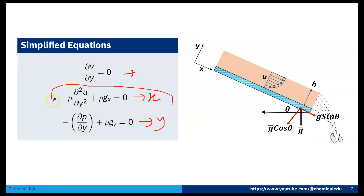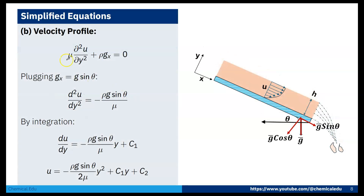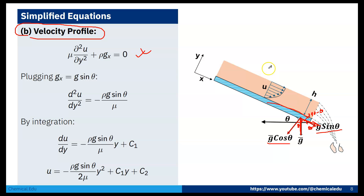To find the velocity profile we use the simplified x-momentum equation. Gravity g acts downward and the inclined surface makes angle theta with the horizontal, so the angle along the surface gives a component decomposition: g cosθ normal to the surface and g sinθ parallel to the flow. Therefore gx = g sinθ, giving: d²u/dy² = −ρg sinθ / μ.